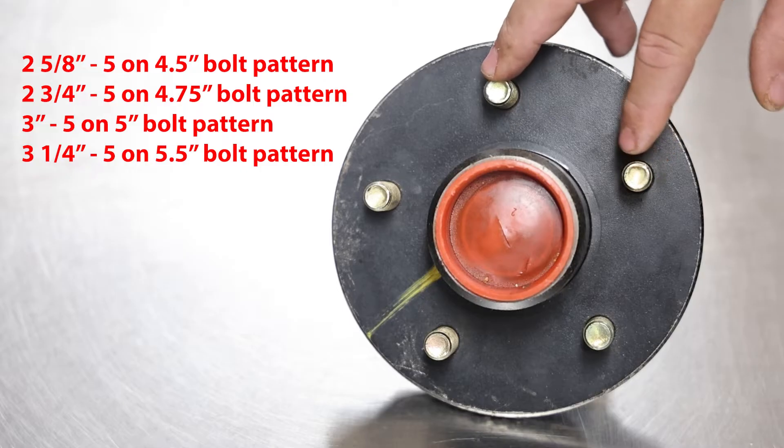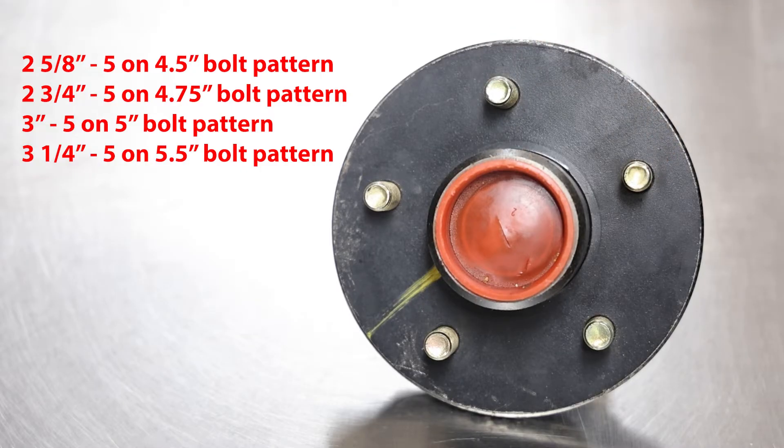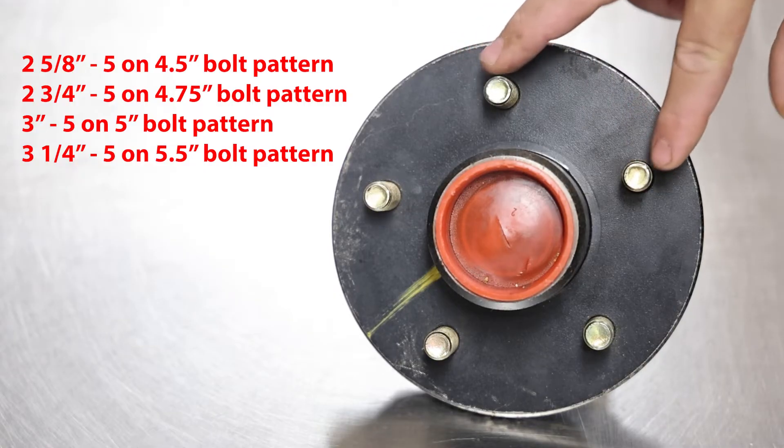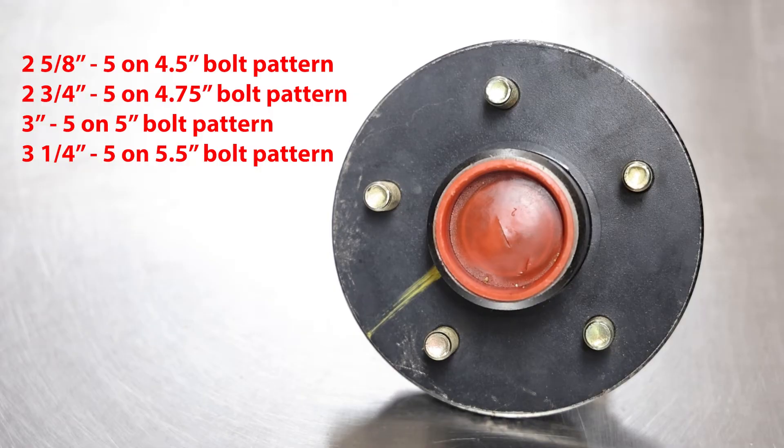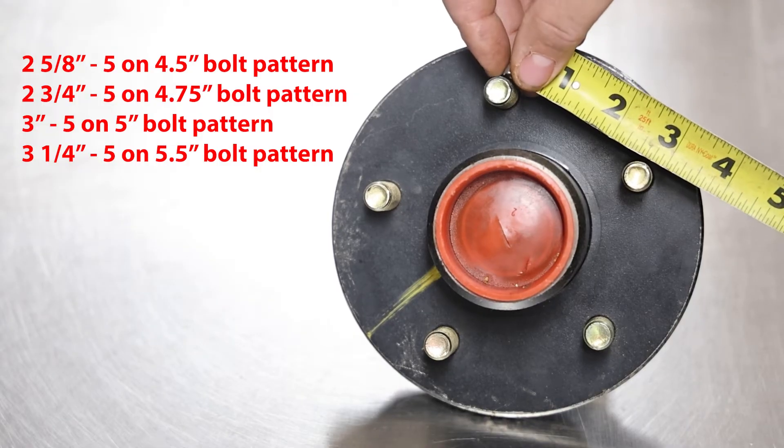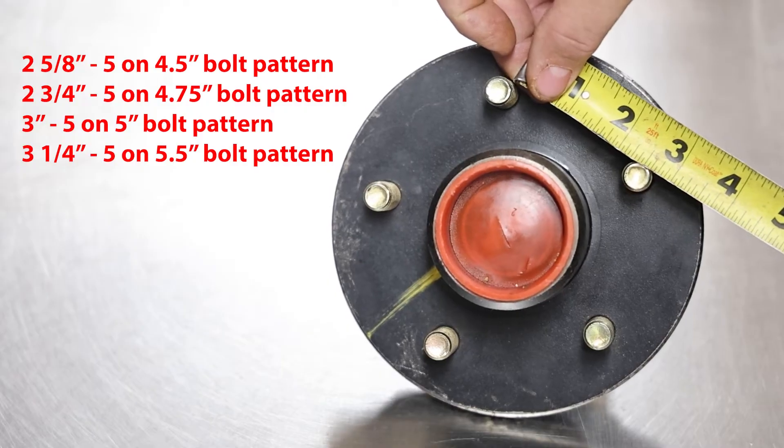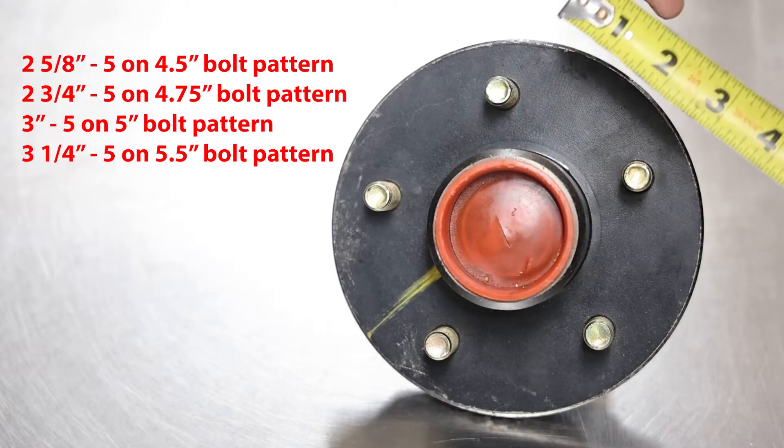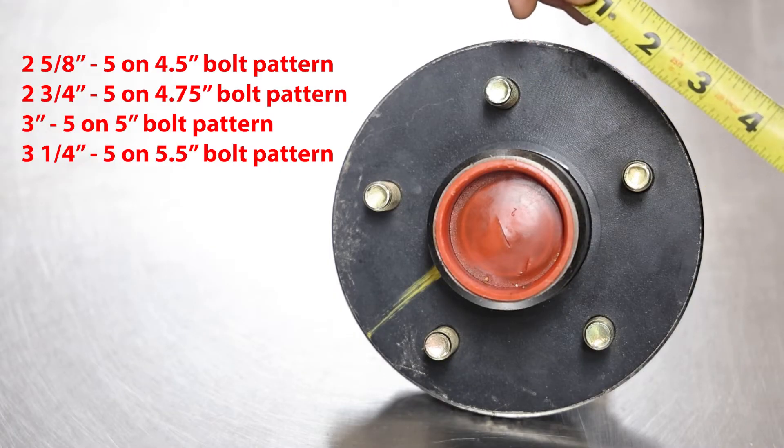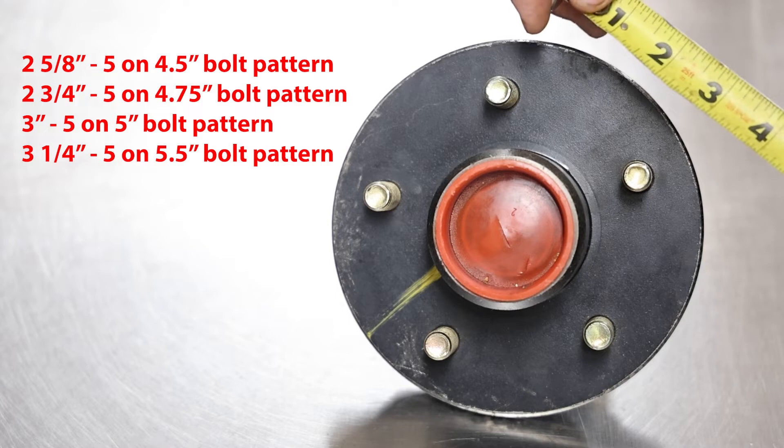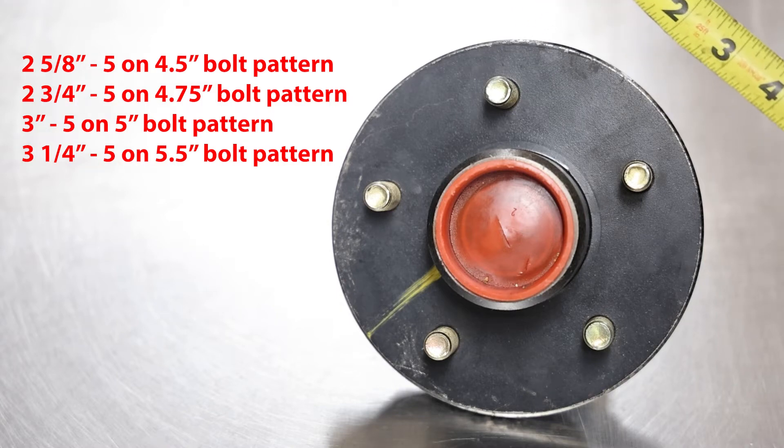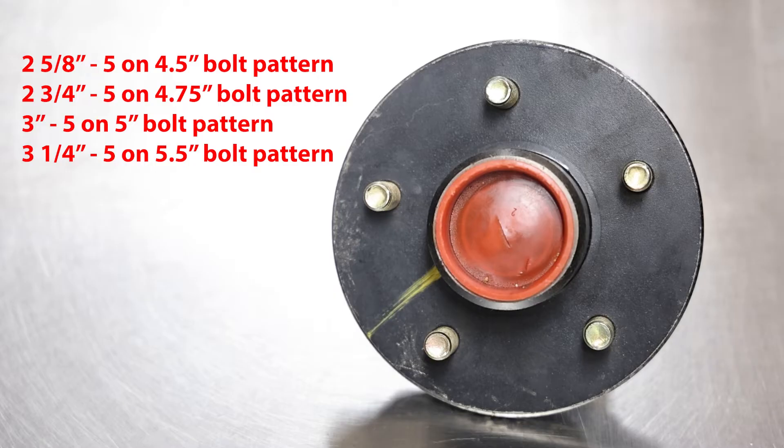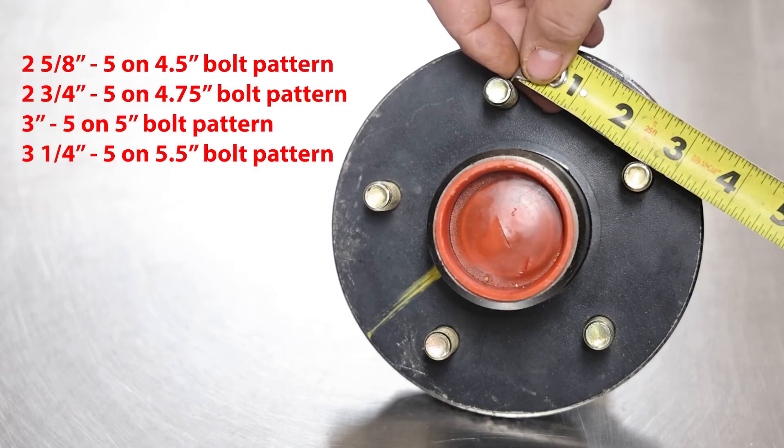So in the description below, I'll leave a guide on what this measurement comes out to be, what bolt pattern it would be. So this being two and five eighths, that means it's a five on four and a half. If you got two and three quarter, that'd be five on four and three quarter. If it's three inch, you would have a five on five bolt pattern, and a very rare bolt pattern, the five on five and a half would be three and a quarter inch from center to center here.